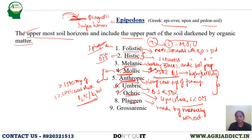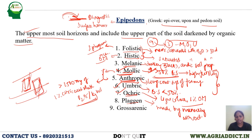The plaggen epipedon shows spade marks in the horizons. The next one is grossarenic epipedon — 'grossarenic' means it is a sandy horizon. Just remember: it is a sandy horizon. So these are the nine epipedons present in soil.